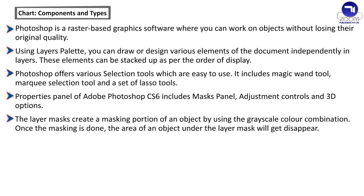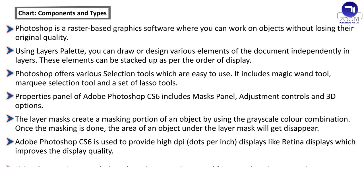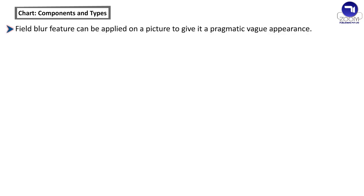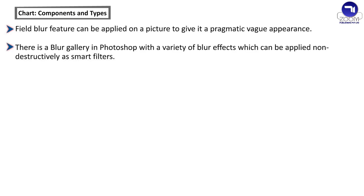Once the masking is done, the area of an object under the Layer Mask will disappear. Adobe Photoshop CS6 is used to provide high DPI — dots per inch — displays like Retina Displays, which improves the display quality. Using the Content Move tool, the selected part can be moved from one location to another. The Field Blur feature can be applied on a picture to give it a vague appearance. There is a blur gallery in Photoshop with a variety of blur effects which can be applied non-destructively as smart filters.